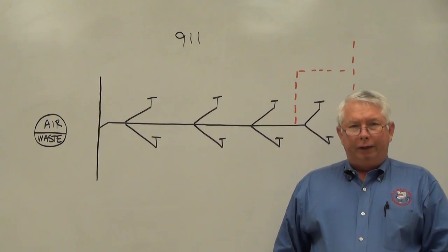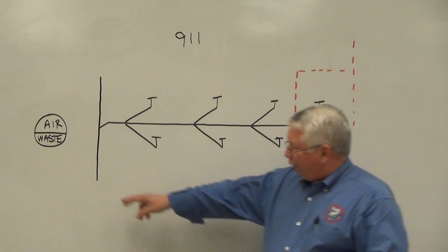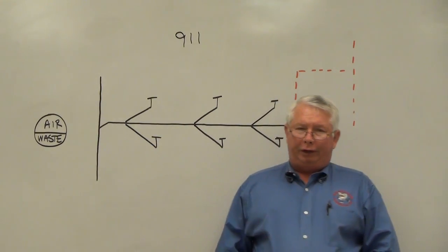The theory behind circuit venting is that the waste travels across the bottom of the pipe, air traveling across the top of the pipe.